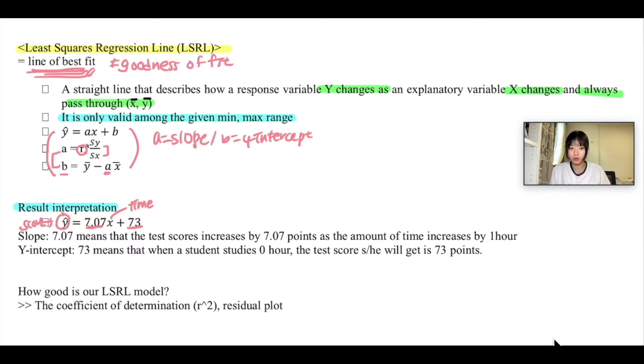If the question asks you to interpret the slope of 7.07, you're going to say that 7.07 means the test scores increase by 7.07 points as the amount of time increases by one hour.